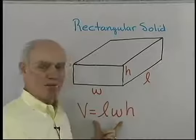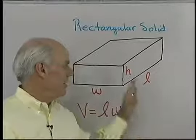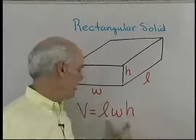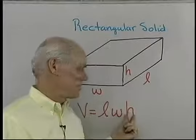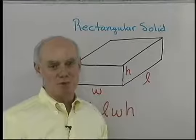So for a formula we write volume is equal to length times width times height. Now if the units of the dimensions here are in inches then the volume will end up being in cubic inches. Likewise if the dimensions are in meters we'll end up with cubic meters.